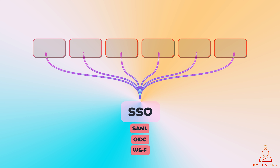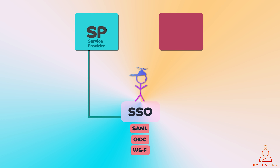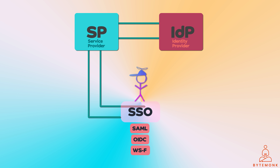Let's define the primary elements in SSO. A user is a person who wants to use the service from the service provider. A service provider provides service to users and gets authentication from the identity provider to grant authorization. An identity provider confirms the identity of the user trying to access the service provider and sends authentication data along with the user's access rights. Open standard protocols define how service providers and identity providers exchange identity information.